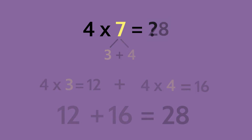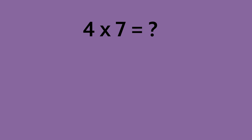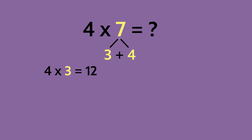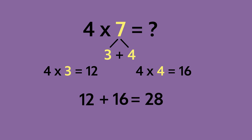Let's recap. Our original problem was four times seven. Some of our mathematicians did not remember their seven multiplication facts, so we decomposed or broke apart the factor seven into four and three. Four times seven was decomposed into two groups: four times three equals 12 and four times four equals 16. Then we added both products together — 12 plus 16 equals 28. That's our answer, so four times seven equals 28. By decomposing the factor seven into four and three, we were able to solve the problem efficiently and accurately.